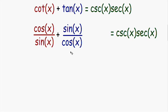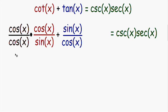Before we add these fractions together, notice they have different denominators: the red fraction has a sine in the denominator, and the blue fraction has a cosine. So we need to make common denominators. Since the red fraction has a sine but no cosine, I'm going to multiply both the top and bottom by the cosine of x. And since the blue fraction has a cosine but no sine, I'm going to multiply both top and bottom by the sine of x.